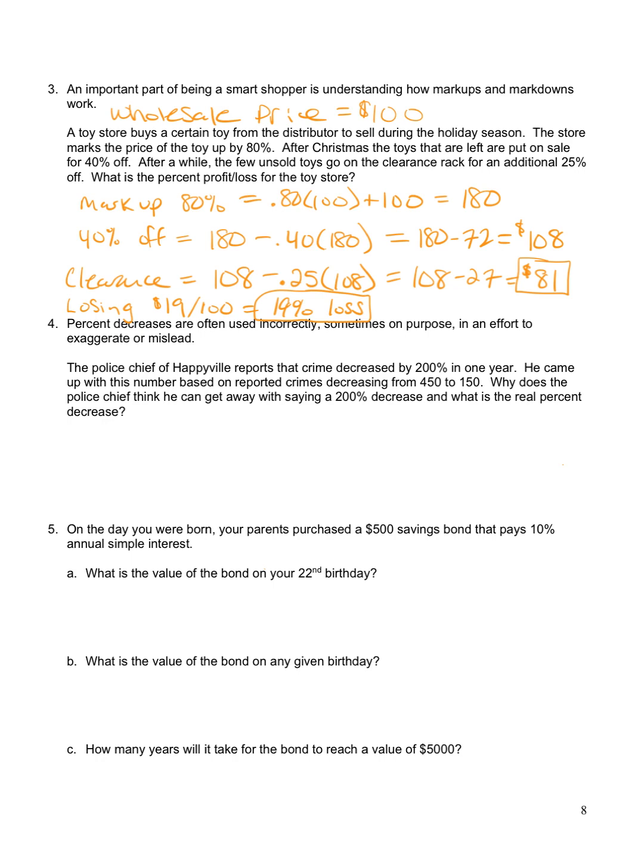Number four, percent decreases are often used incorrectly, sometimes on purpose, in an effort to exaggerate or mislead. Here's an example. The police chief of Happyville reports that crime decreased by 200% in one year. He came up with this number based on reported crimes decreasing from 450 to 150. Why does the police chief think he can get away with saying 200% decrease? And what is the real percent decrease?